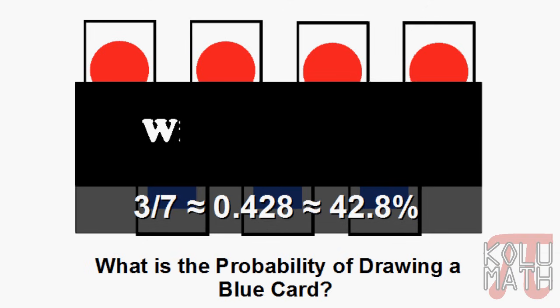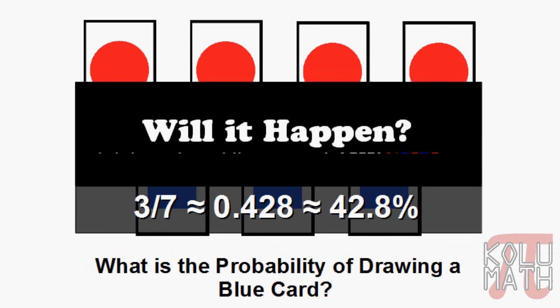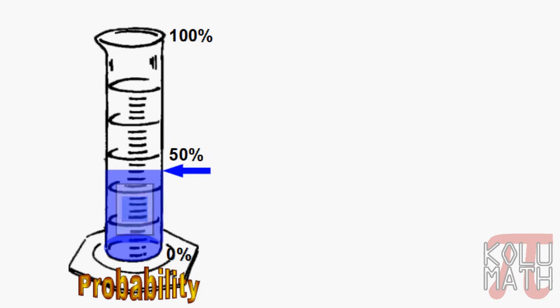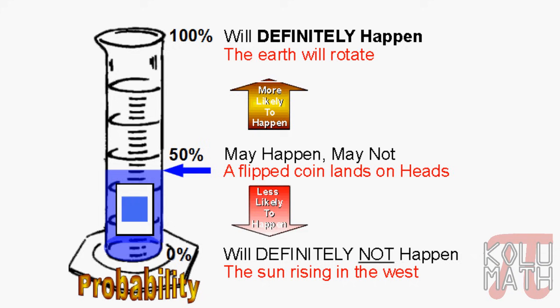A question arises: will it happen? If we check it on the probability meter, 42.8% brings us just below 50%, which means it may happen, may not. So it's almost like flipping a coin — a little bit less likely than flipping a coin.